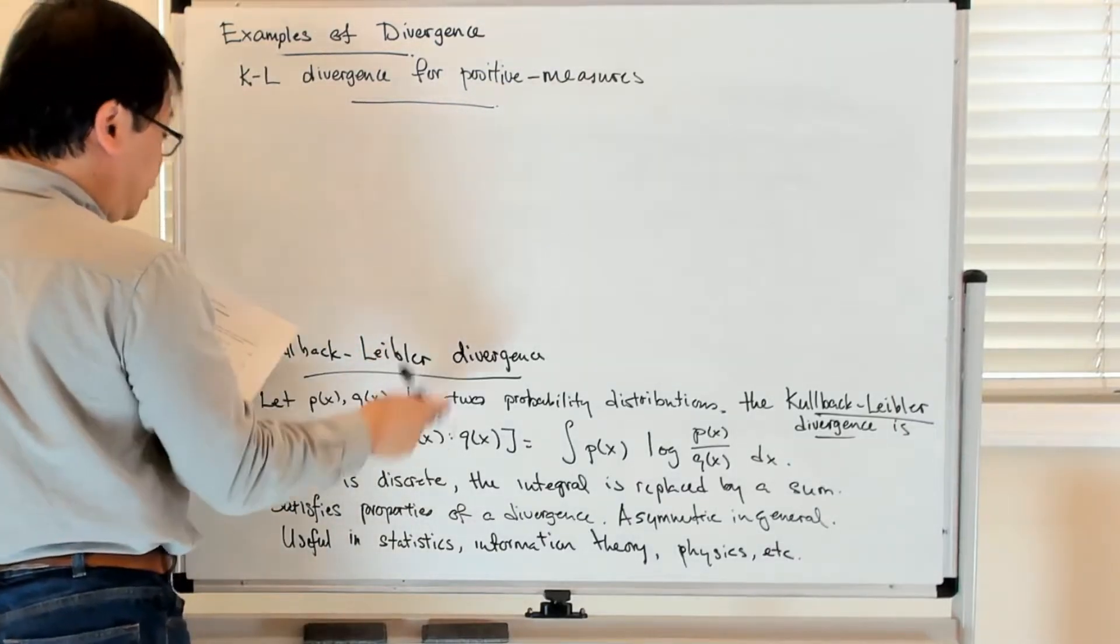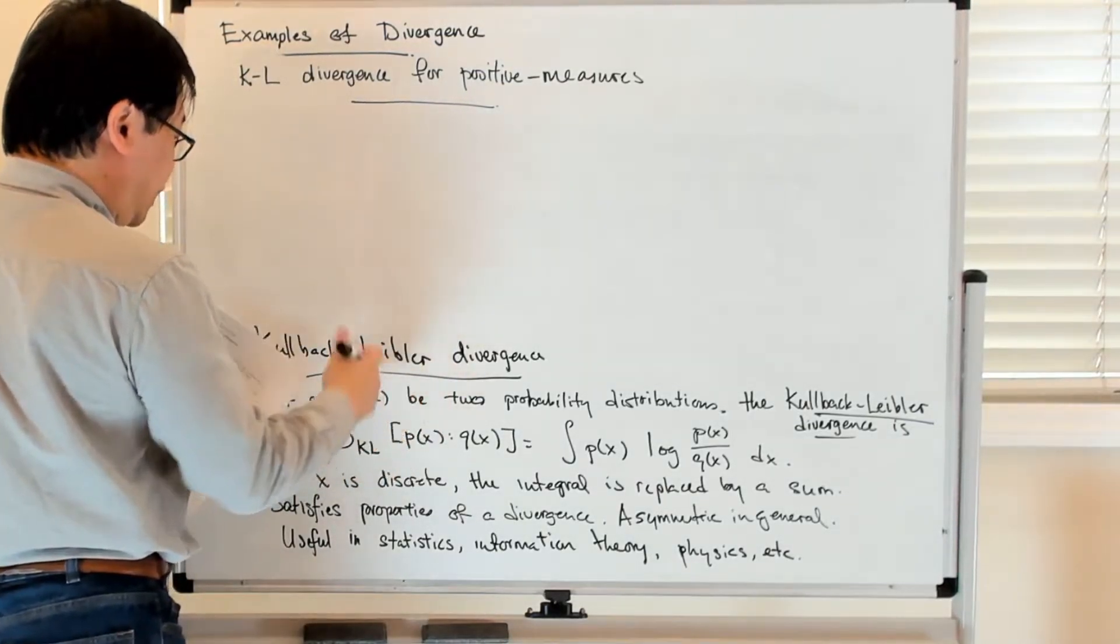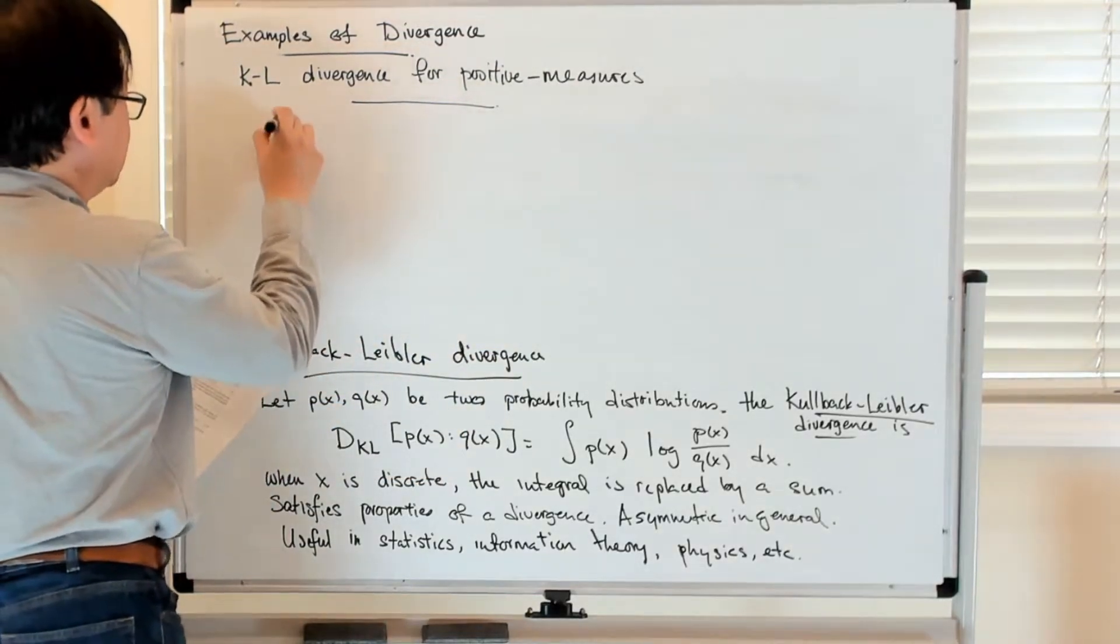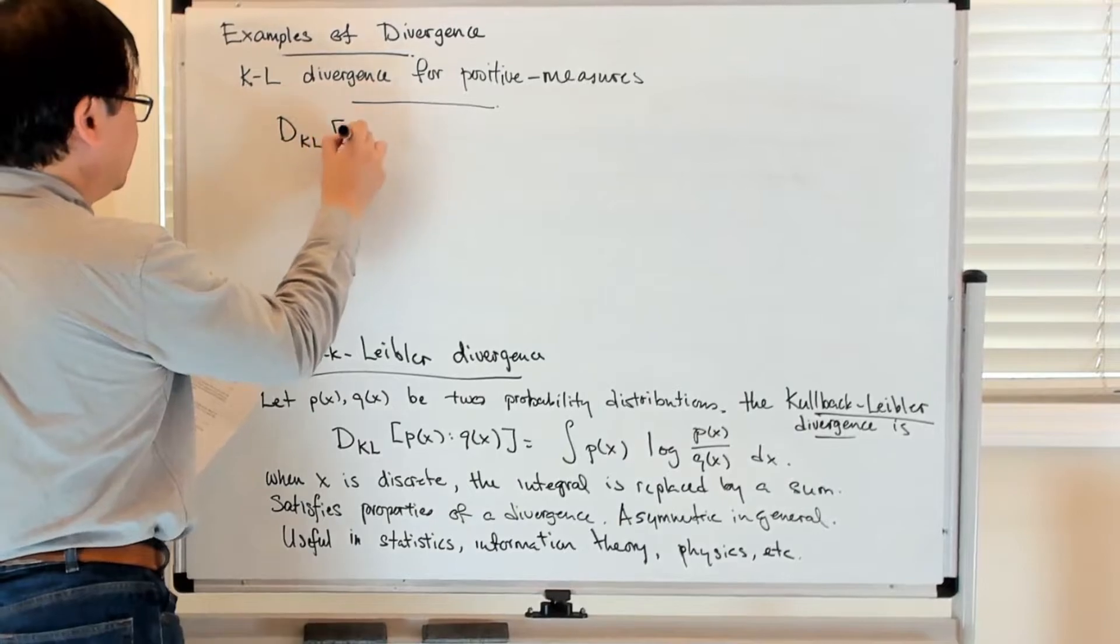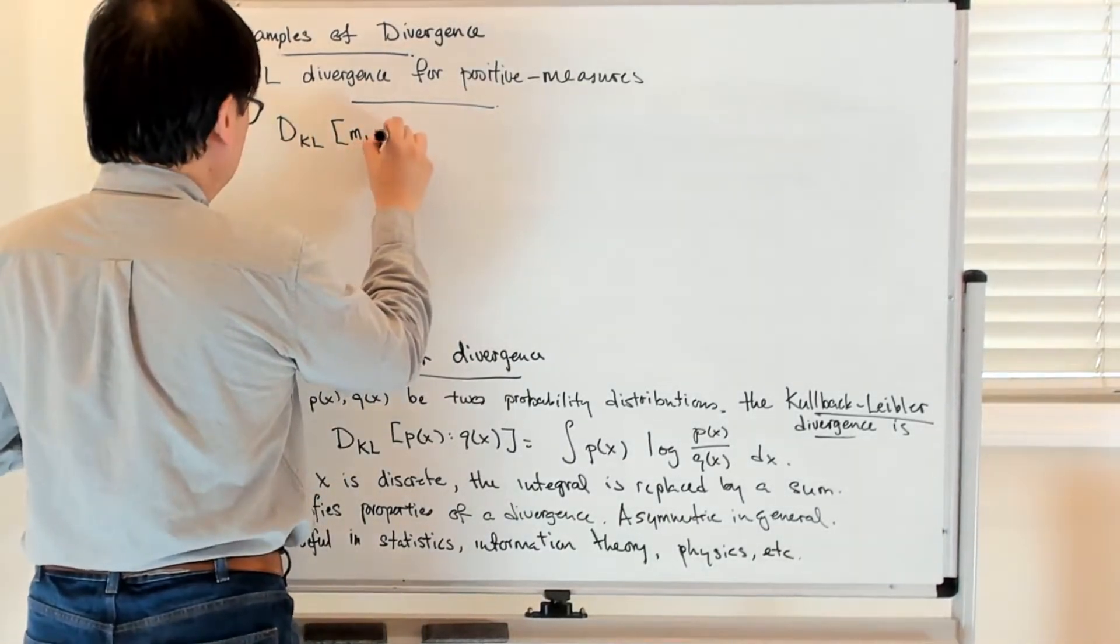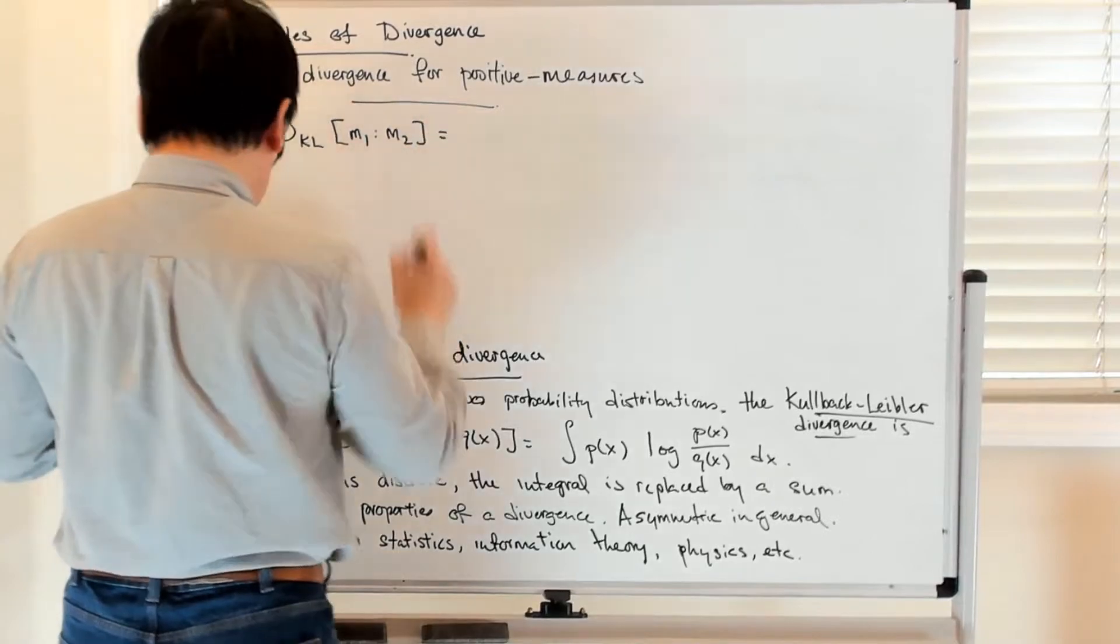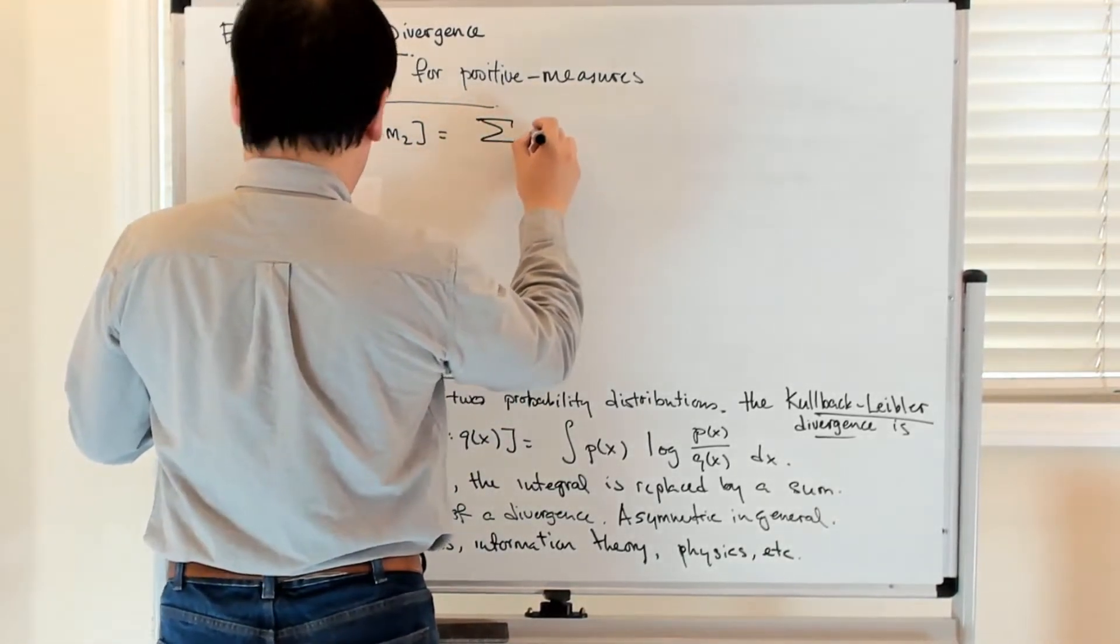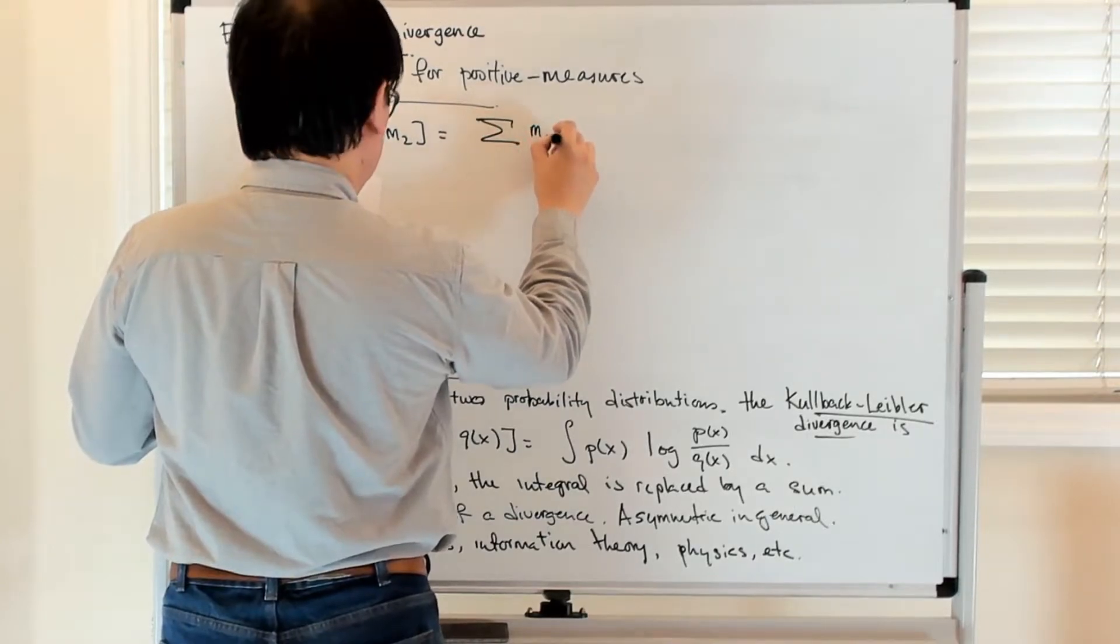We're going to extend this idea of the KL divergence for probability distributions to positive measures. So D_KL between two measures, let's call them m1 and m2, is just given by the following: the sum of m1_i